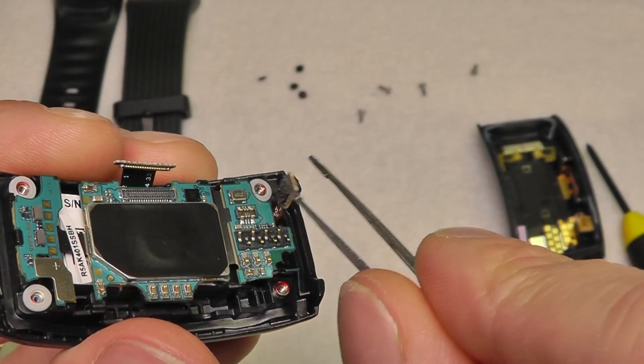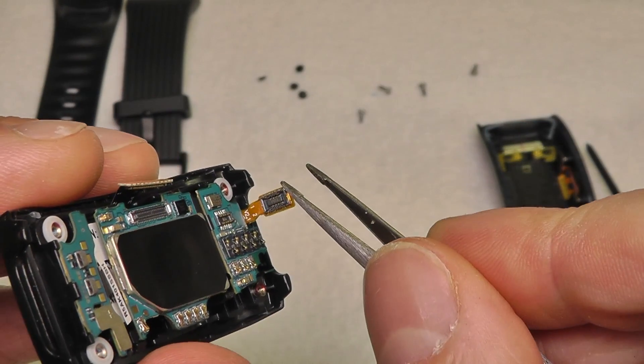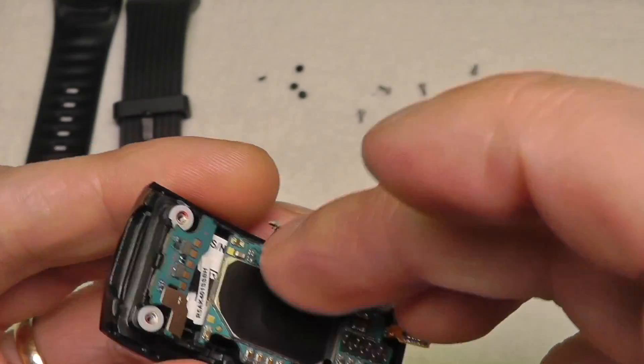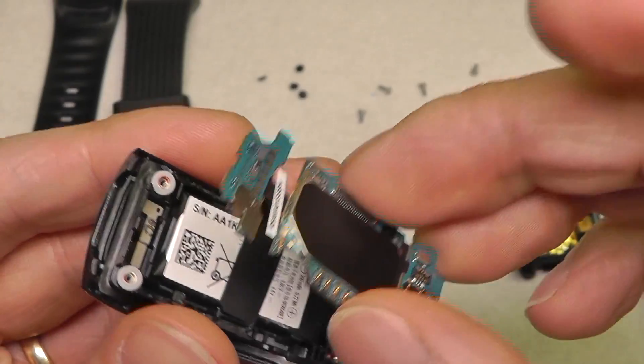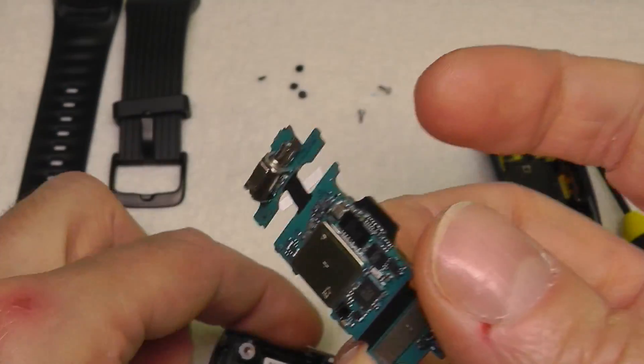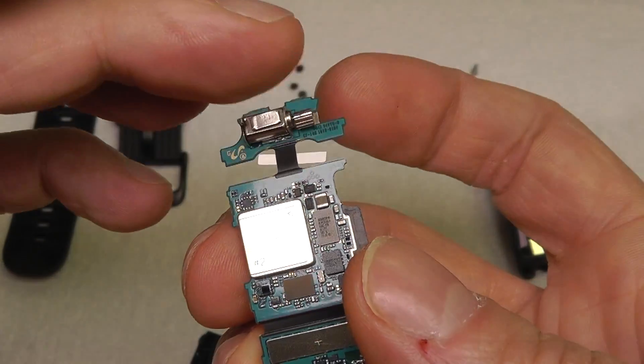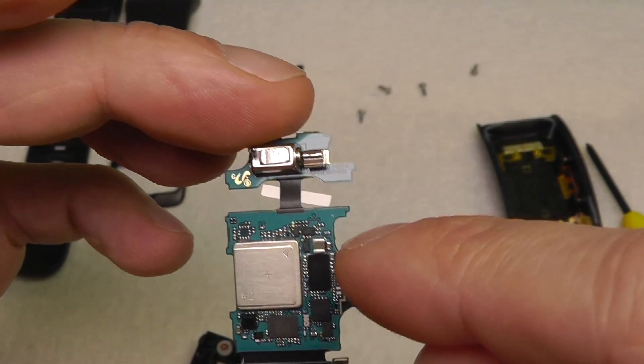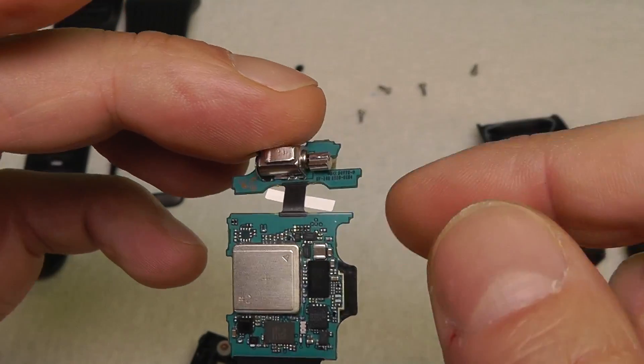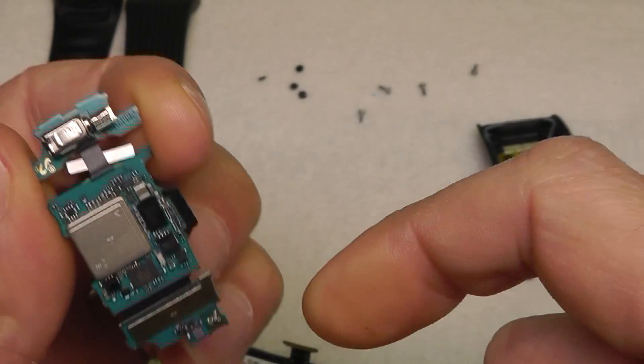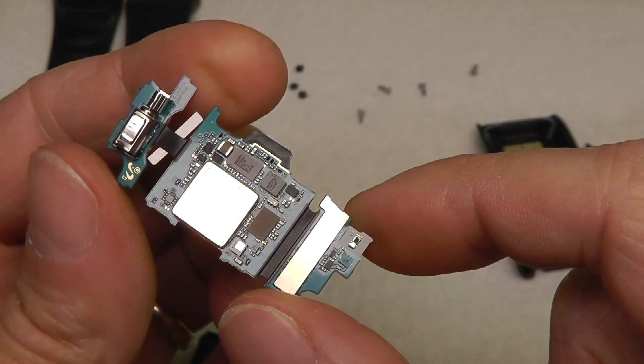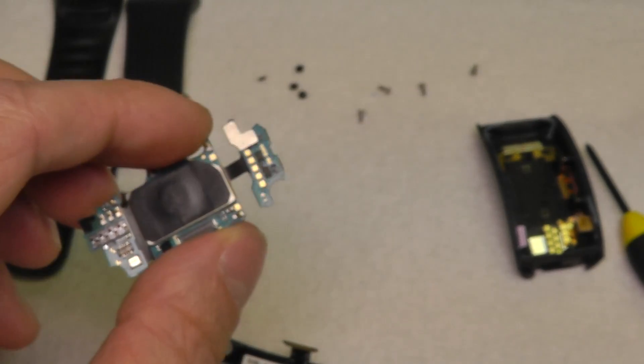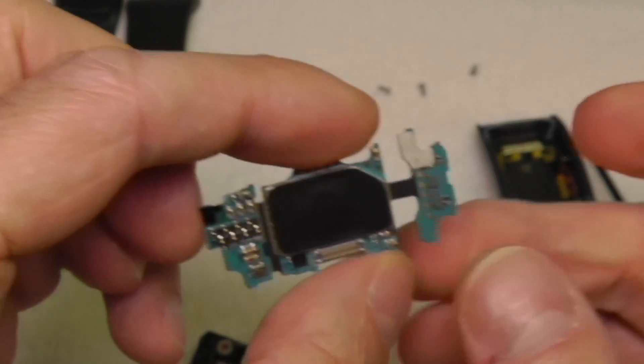Then we can take off the main boards. It's basically three pieces that we're dealing with. You can also see here the motor.